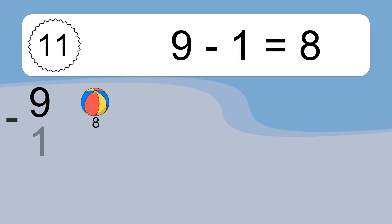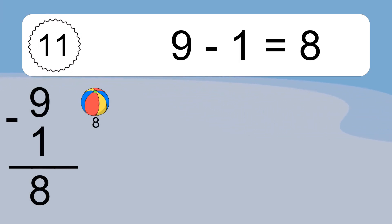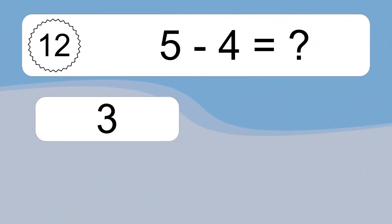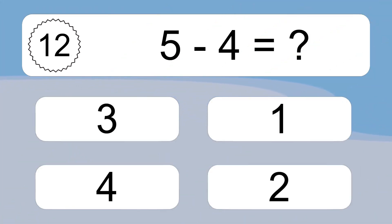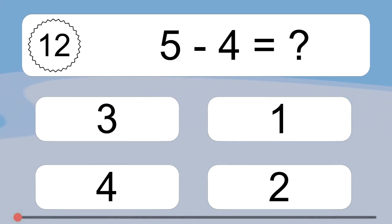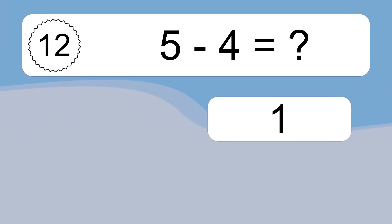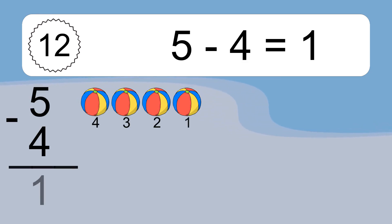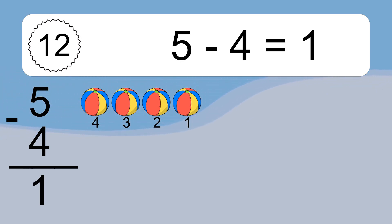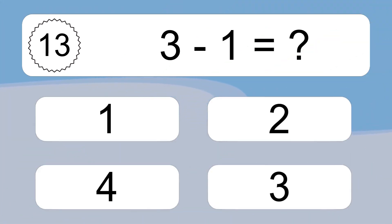9 minus 1 equals what? 9 minus 1 equals 8. Let's count it: 8. 5 minus 4 equals what? 5 minus 4 equals 1. Let's count it: 4, 3, 2, 1.